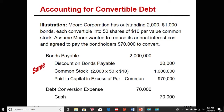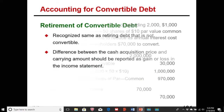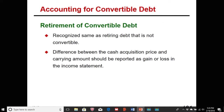The third instance with convertible debt is retirement. When that debt retires, we recognize it the same as retiring any non-convertible debt. Any difference between the cash acquisition price and the carrying amount should be reported as a gain or a loss on the income statement.